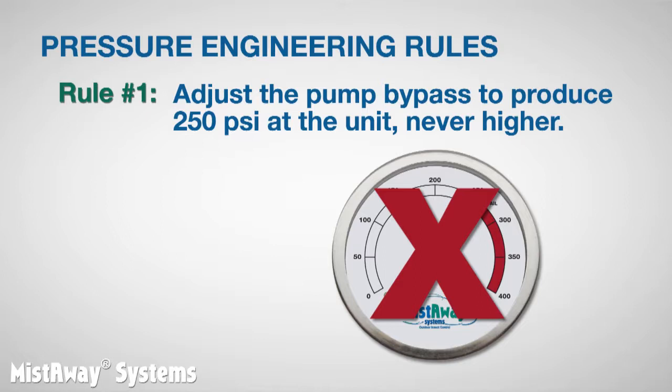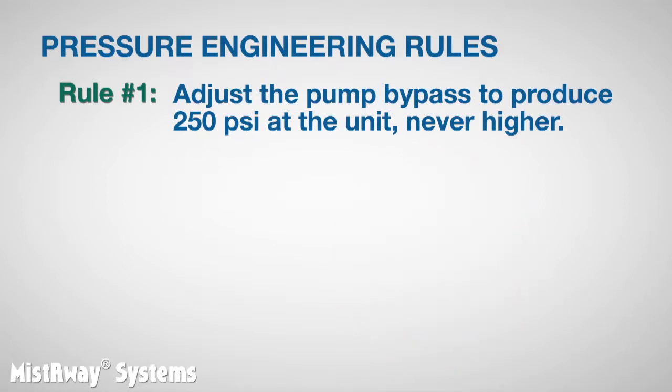Rather, you have too much pressure drop in your nozzle circuit and you'll need to rethink how it is plumbed. We'll talk about that in another video. Repeating rule number one for emphasis: adjust the pump bypass to produce 250 psi at the unit, never higher. Never higher.